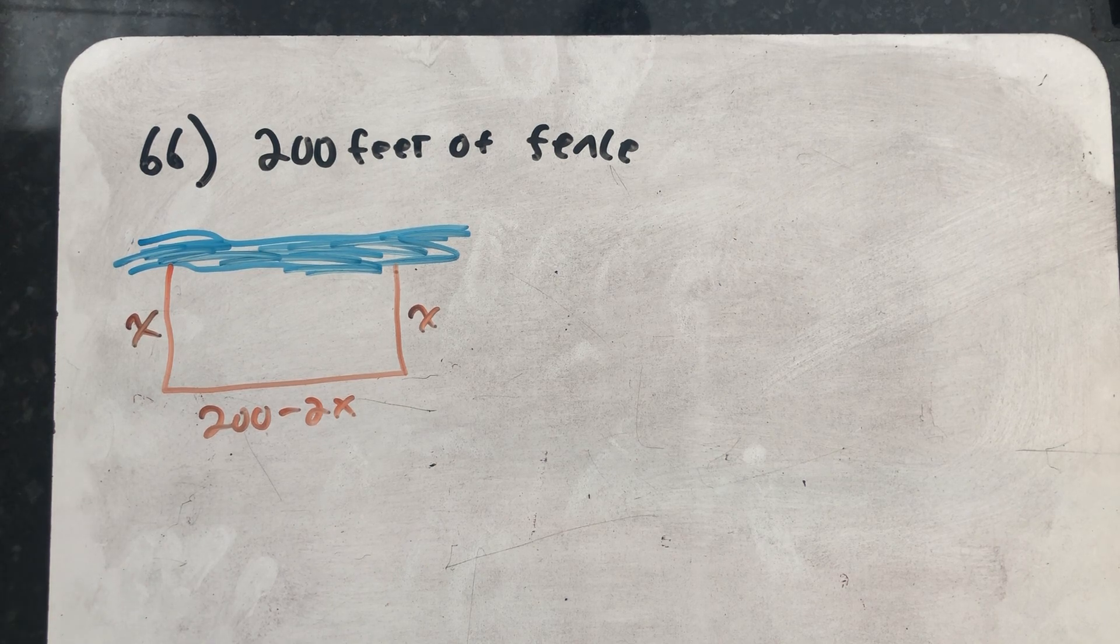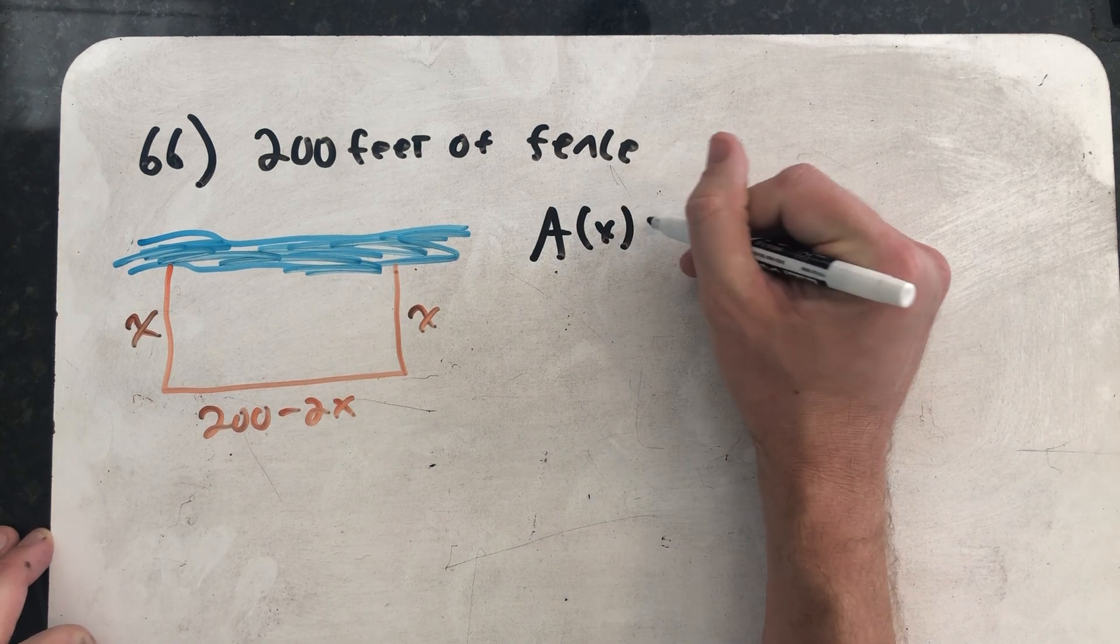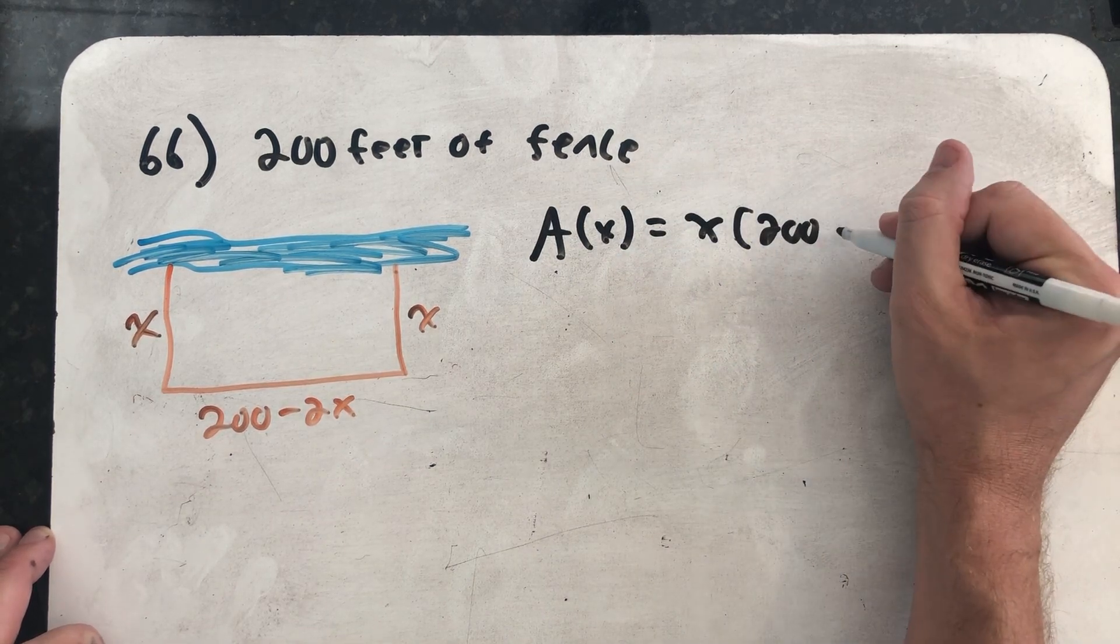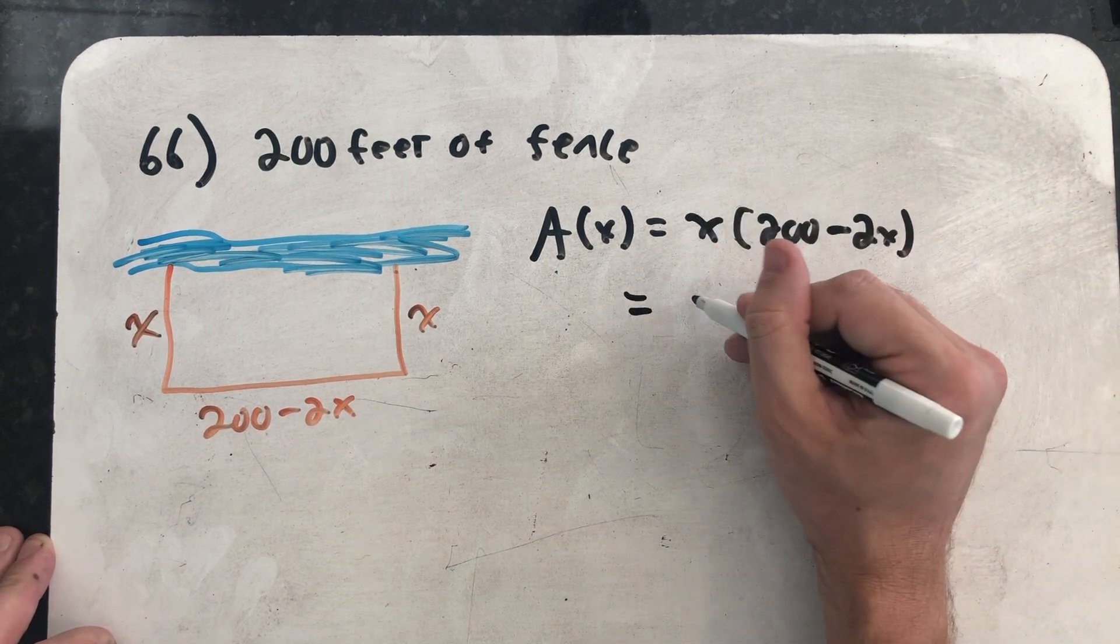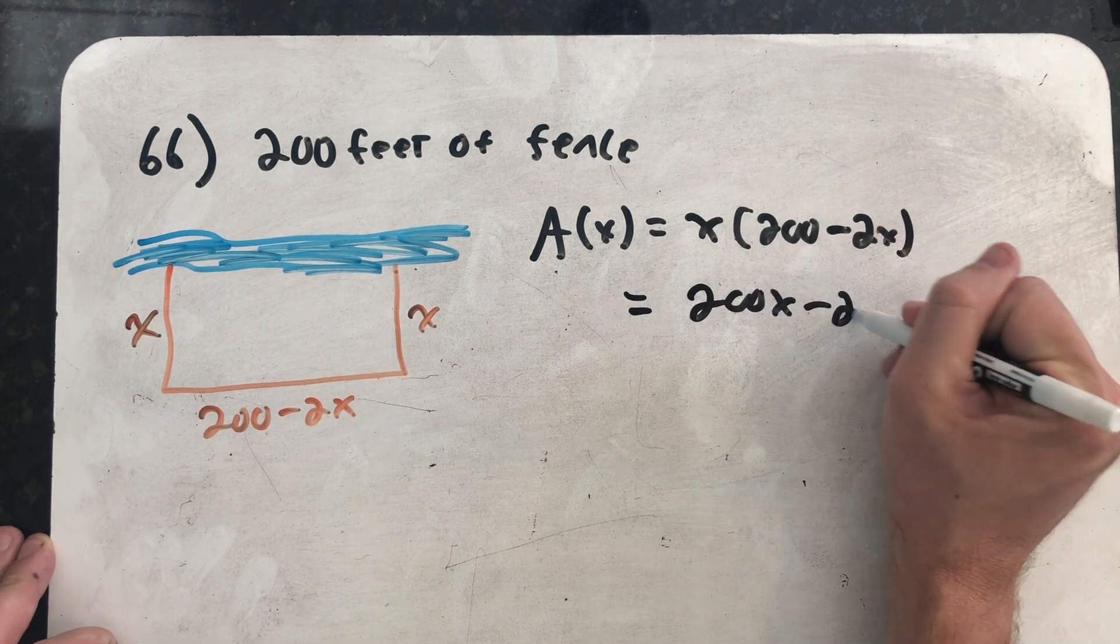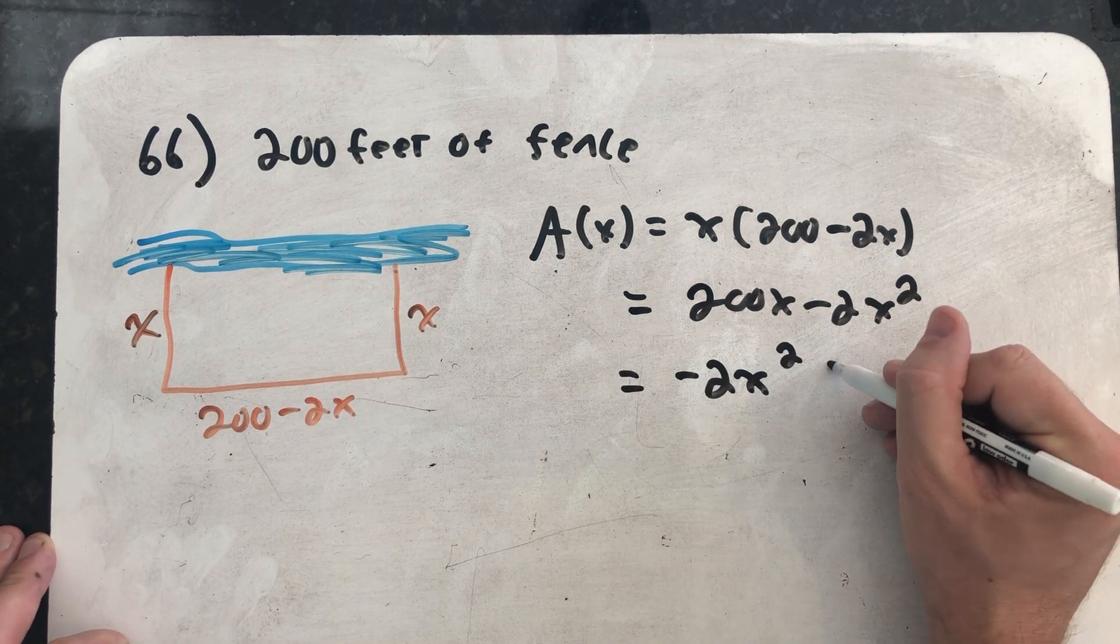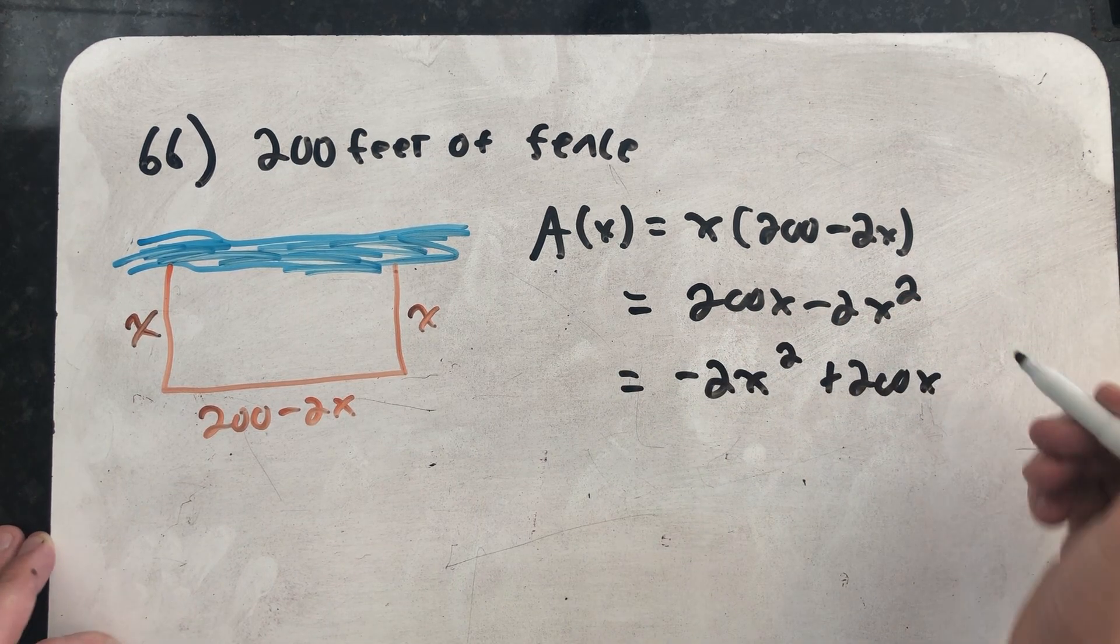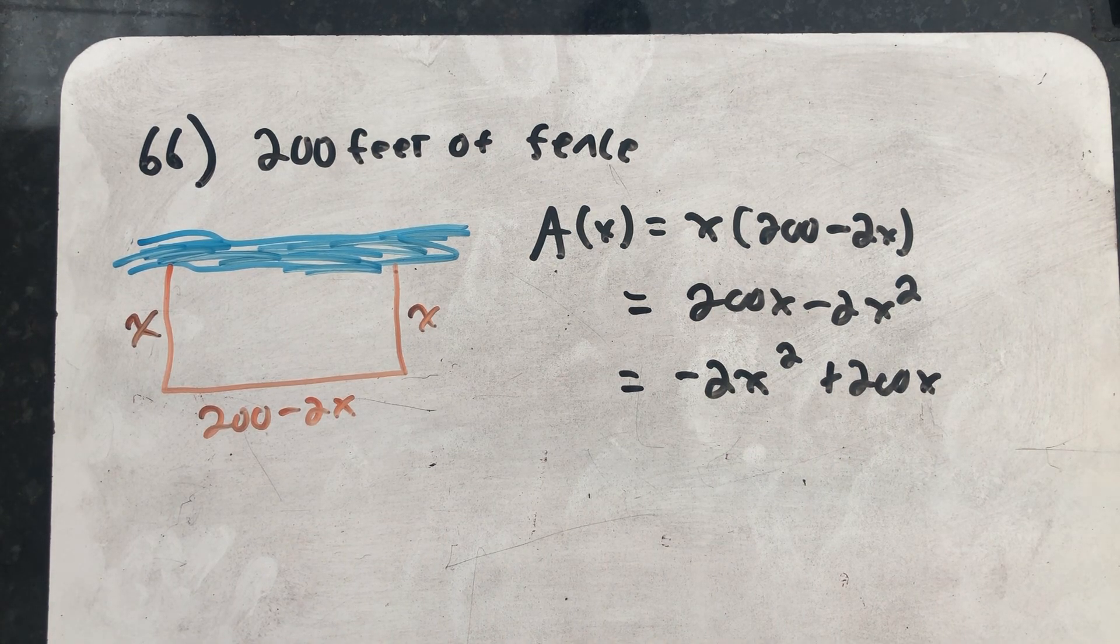All right. Well, the area function would be that length times the width, so x times 200 minus 2x. Well, if I distribute through, I would get 200x minus 2x². And this is a quadratic function. It will have a maximum at its vertex. So let's write down this vertex and see if we can answer the question.